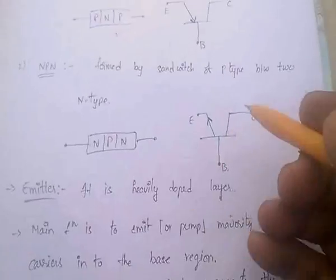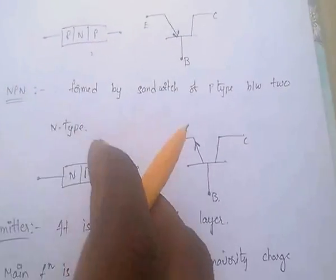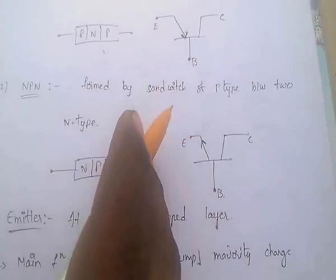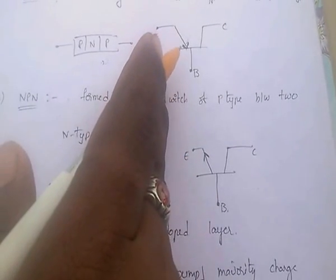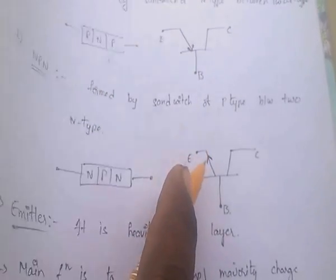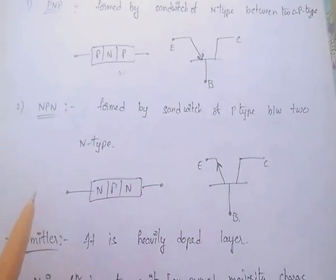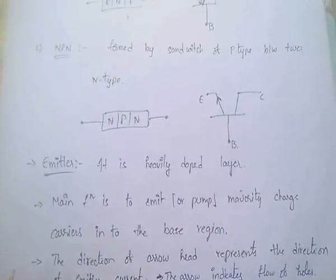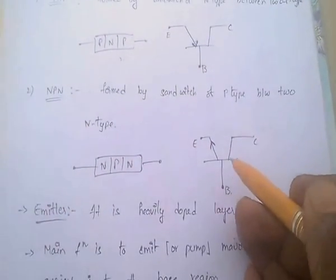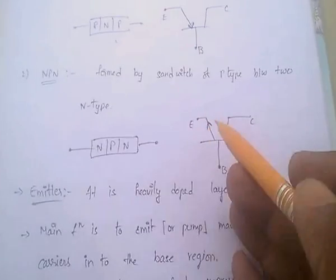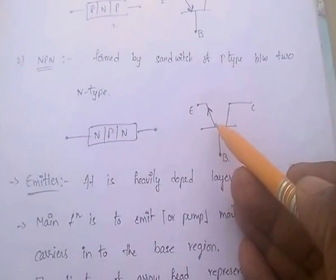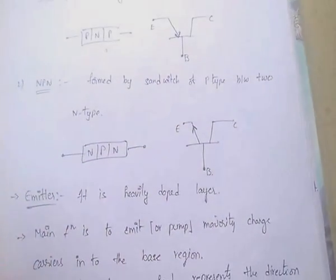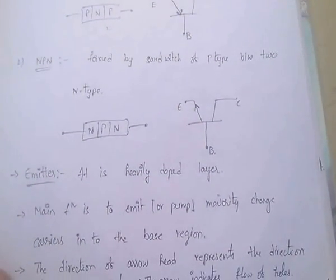The direction of the arrowhead shows the direction of emitter current and indicates the flow of holes. Coming to the emitter terminal, it is highly doped — very, very important. In the three terminals, emitter is highly doped.